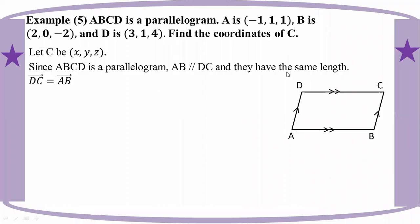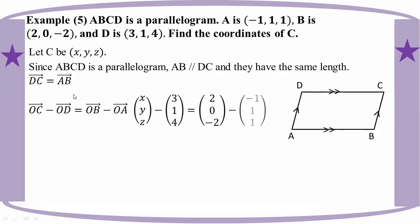They have the same length. They have the same length. If you look at the line, you can see the number order. DC is equal to AB. If we have AD linked to AB, they are related only through AB. So DC equals AB.